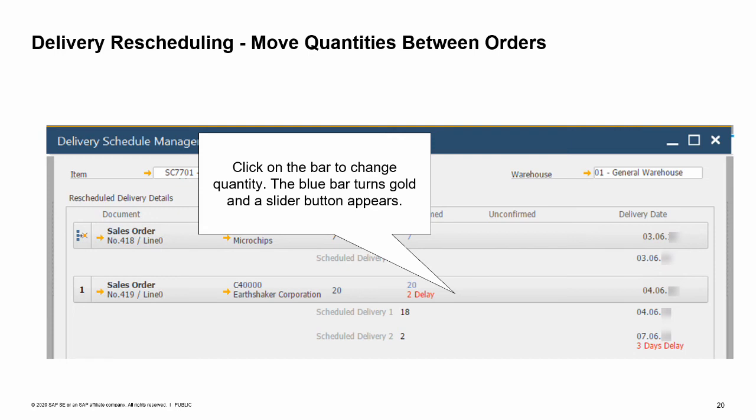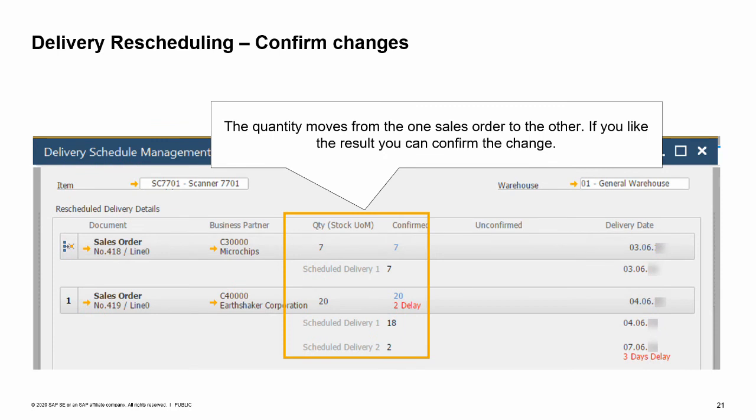The bar turns gold and a slider button appears. Drag to the left to reduce the quantity. Here we see the user reducing the quantity of the sales order by two. The quantity moves from one sales order to the other. You can see the full quantity is now available to be delivered on the first sales order. The lower priority second sales order is now delayed by three days.